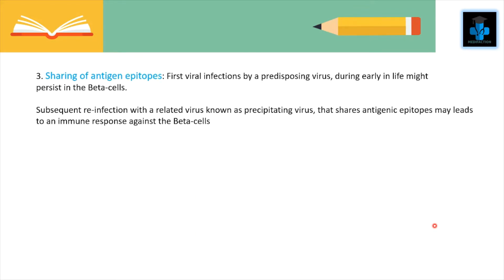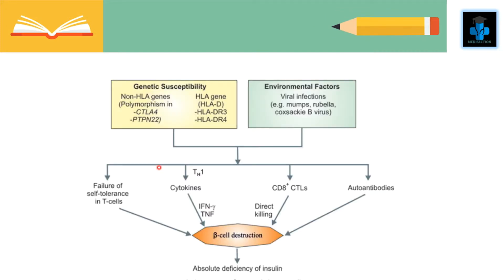Third, sharing of antigen epitopes — early viral infections by a predisposing virus during early life might persist in the beta cells, and subsequent reinfections with a related precipitating virus that shares antigen epitopes may lead to an immune response against the beta cells. Autoimmune damage starts many years before the disease becomes clinically evident; hyperglycemia and ketosis occur after more than 90% of beta cells have been destroyed.